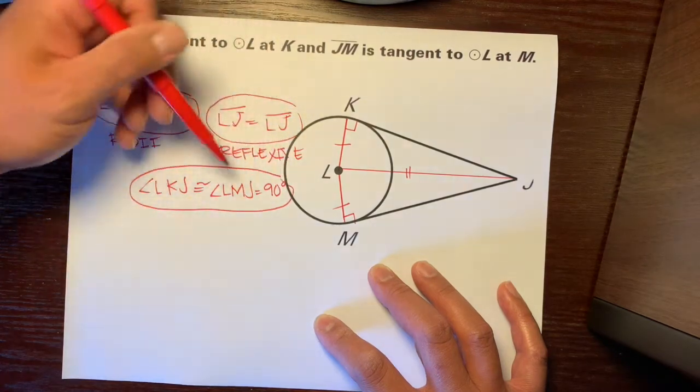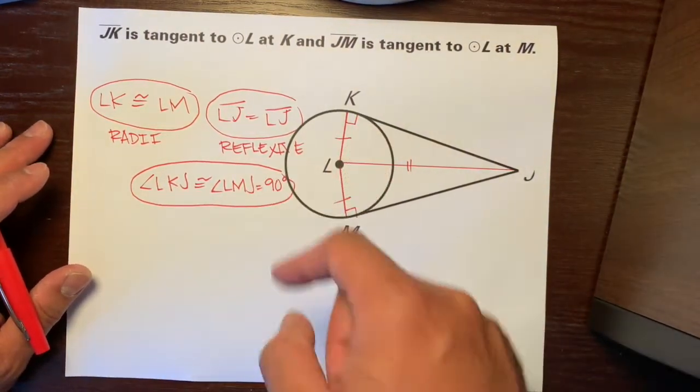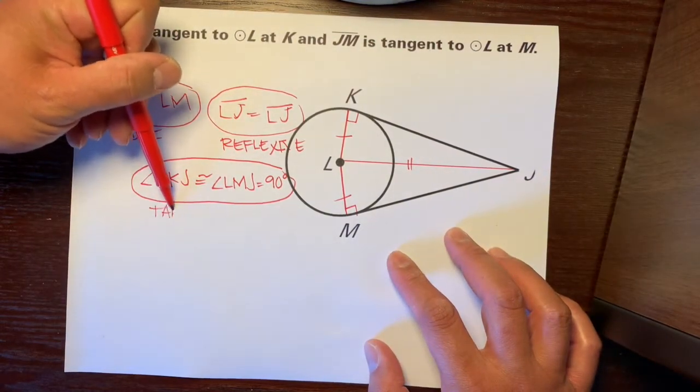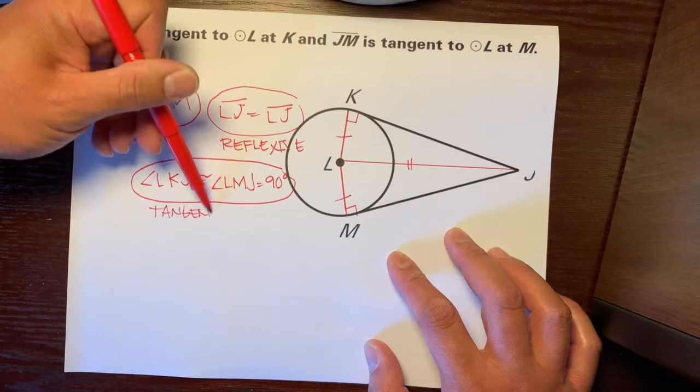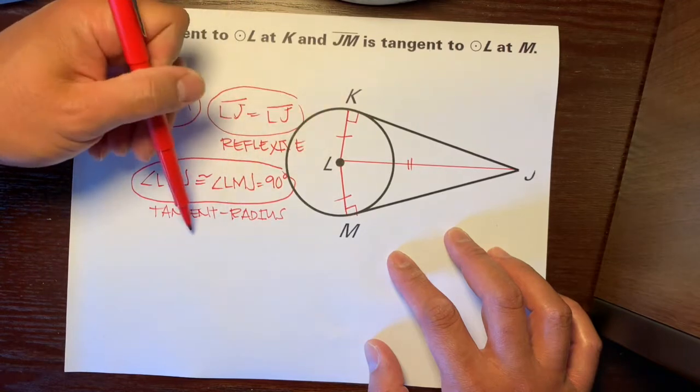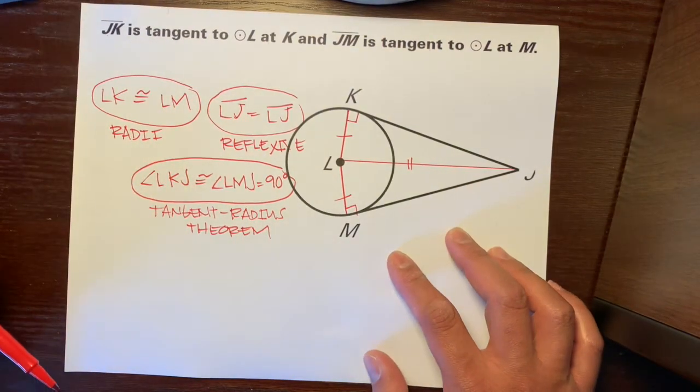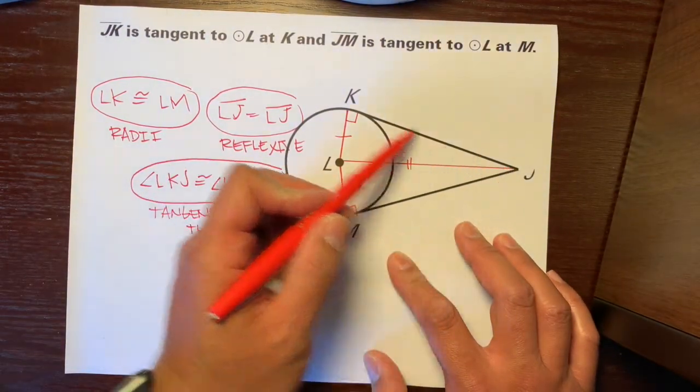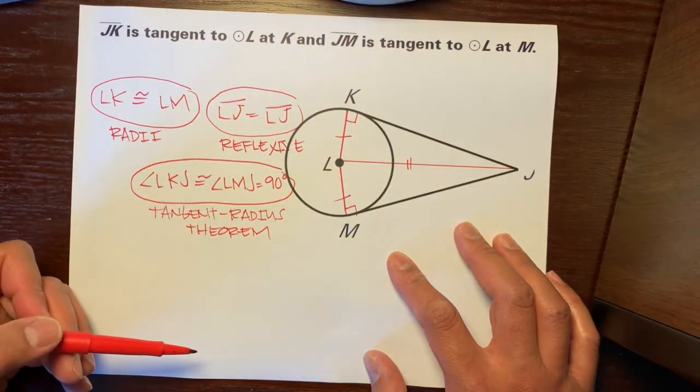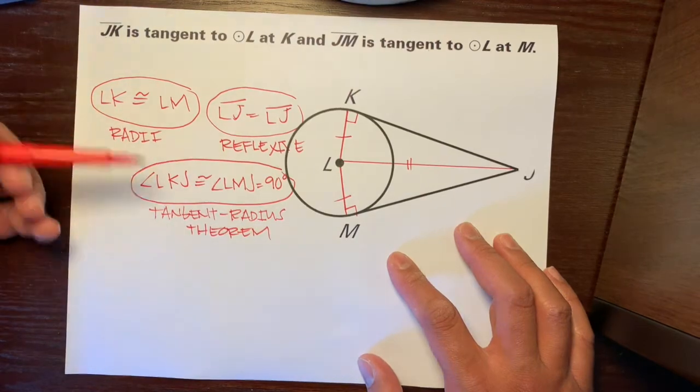So, you could say that, or you could say both are right angles, or whatever. So, just know that they're congruent, because they both equal 90 degrees, because of the tangent radius theorem. So, you can watch another video, but pretty much whenever you have a tangent and a radius that connect, they are perpendicular, so they make right angles. So yeah, I have another video on that, so just look it up if you want to. If not, just keep following along.